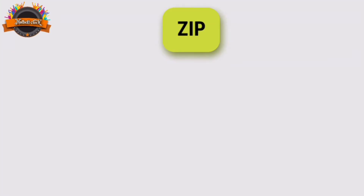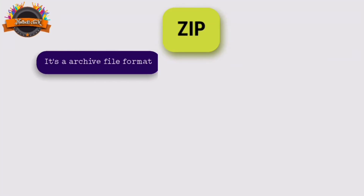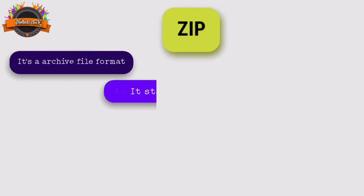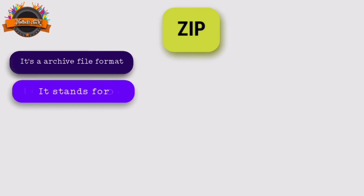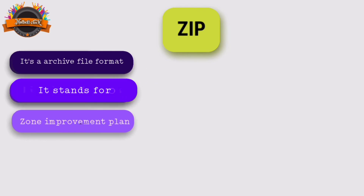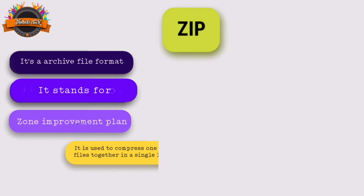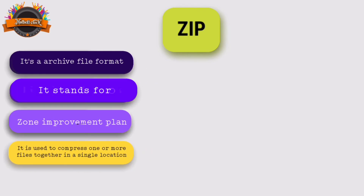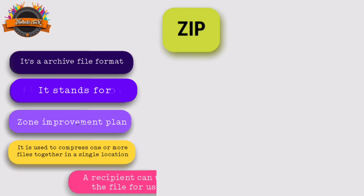ZIP is an archive file format. It stands for Zone Improvement Plan. It is used to compress one or more files together in one location.